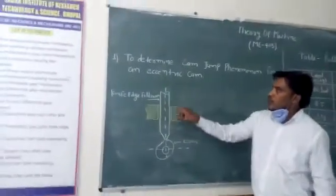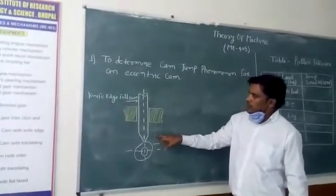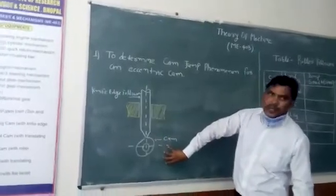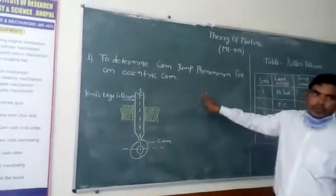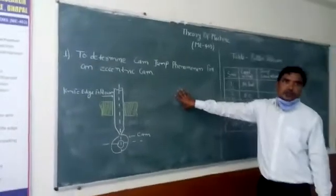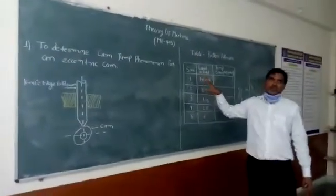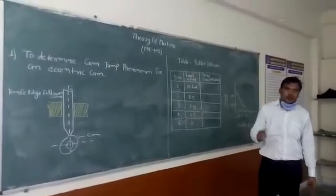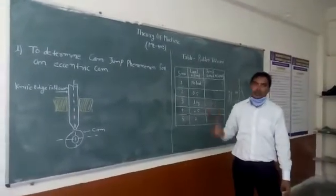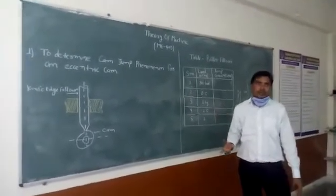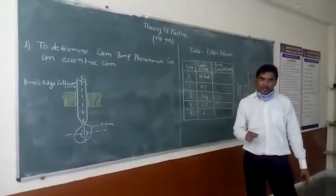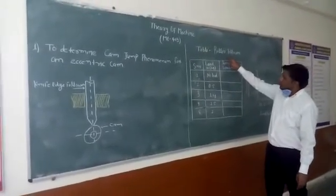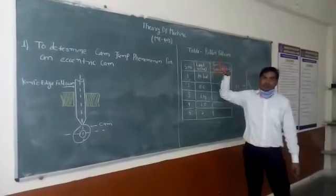We will use a knife-edge follower to determine the jump phenomena, and we will also use a roller follower, because we have a platform for that follower. By the help of this follower we can also determine the cam jump phenomena. In this experiment we will take a roller follower. So let's start the experiment.